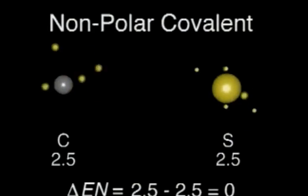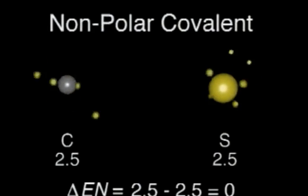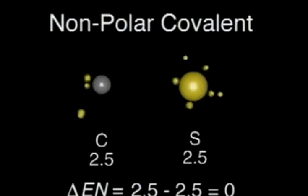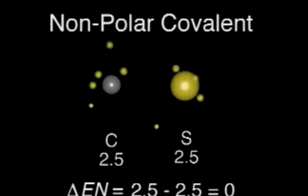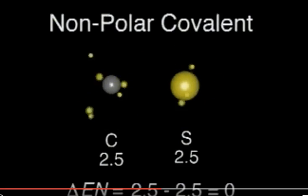When bonding atoms have nearly equal electronegativities, neither can attract electrons away from the other. In a carbon-sulfur bond, the electron pair is shared almost equally between the two atoms, resulting in a covalent bond.